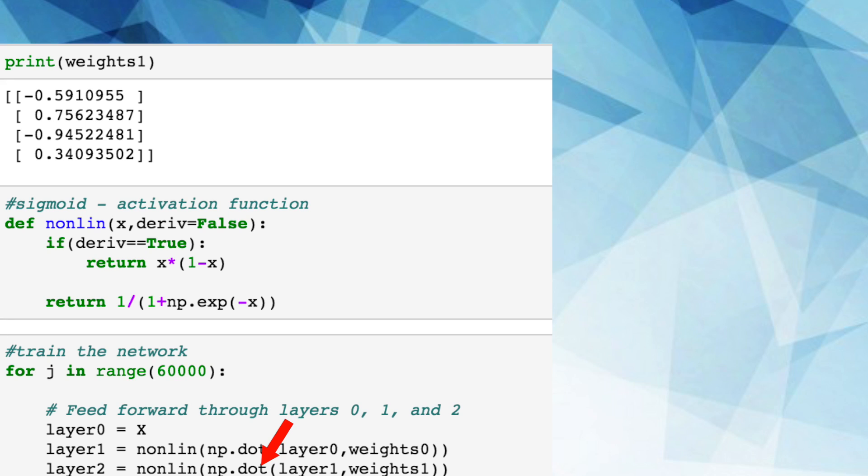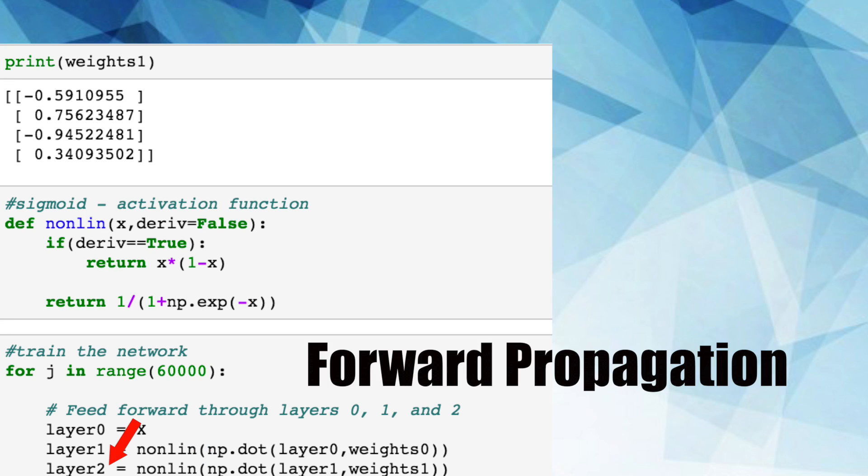We compute the dot product of the hidden layer neurons and the next weight matrix between the hidden layer and the output layer. Then we once again apply our activation function to it. This resulting value is our prediction and this process that we just completed is called forward propagation.